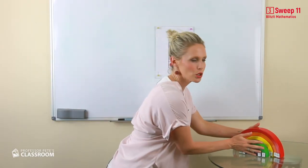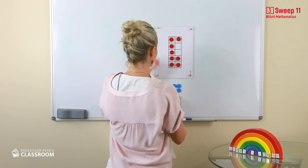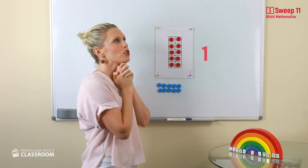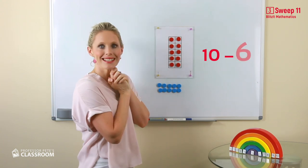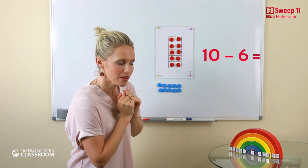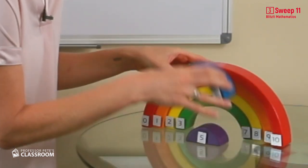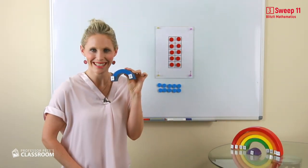Now let's do a trickier one. 10 subtract 6. My rainbow number fact. Here it is. 6 and 4, 4 and 6.